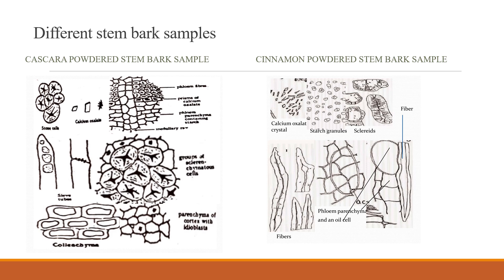The presence of oil cells in cinnamon, which is not seen in cascara, can also serve as a distinguishing feature. The irregular shaped sclerids also differ in appearance between the two samples, which also form a basis of differentiation.